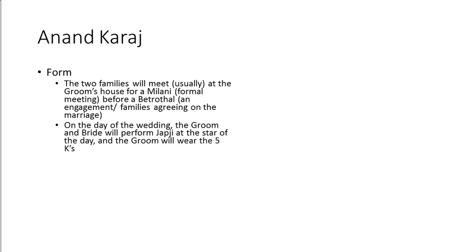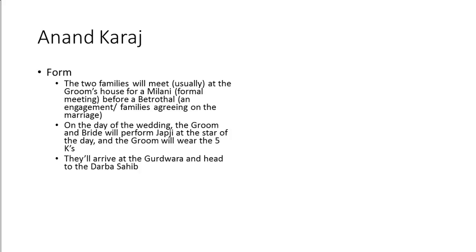On the day of the wedding, the groom and the bride will perform Japji in the morning at the start of the day, and the groom will usually wear the 5Ks. There are a few exceptions, but it is mostly preferred for him to wear the 5Ks at this ceremony. Then they'll head to the Gurdwara.